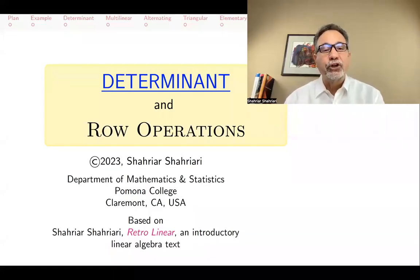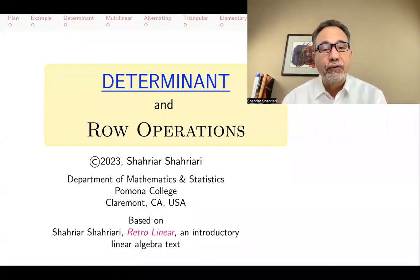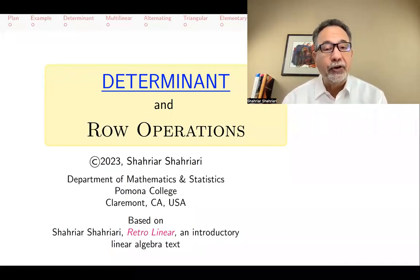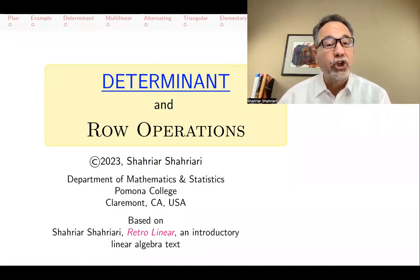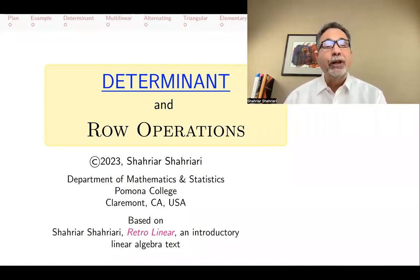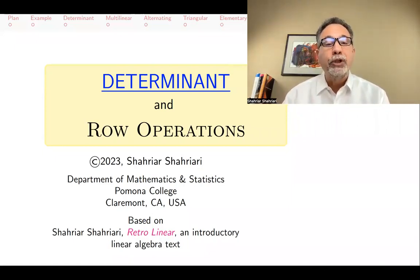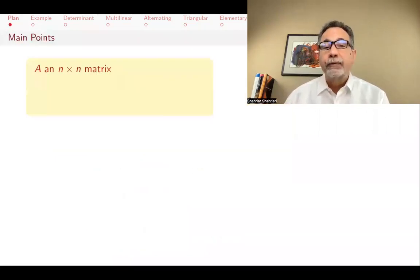Hello, my name is Shahriyar Shahriyari, and this is a lecture in a series of lectures on introductory linear algebra based on my book, Retro-Linear. The subject of this lecture is determinants, and what happens to the determinant of a matrix when you do an elementary row operation. So that's our basic question.